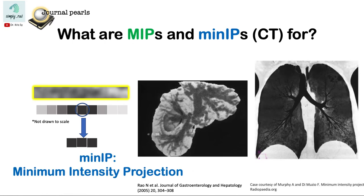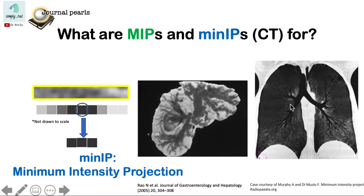It's also useful for examining the airways, like the trachea and the bronchi, for examining bronchiectasis. Note here in this MinIP, the vessels are suppressed and this image only displays the lung parenchyma and the bronchi.